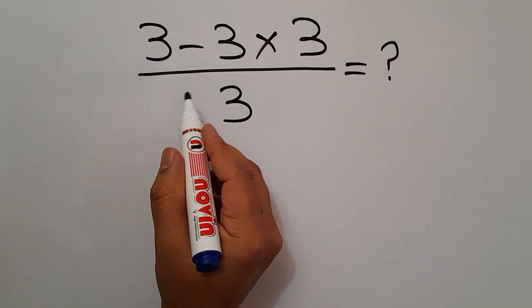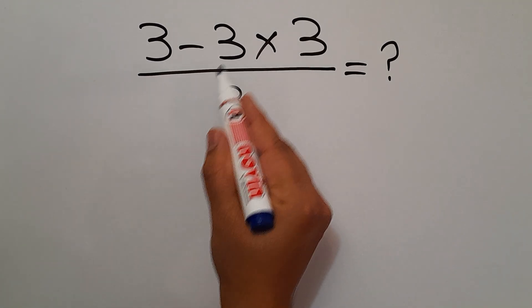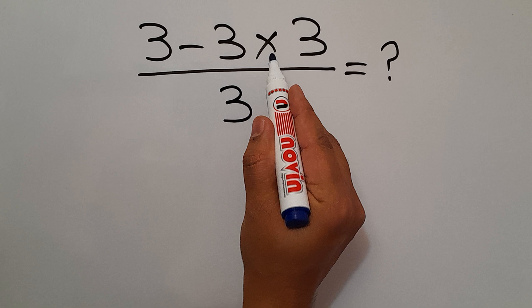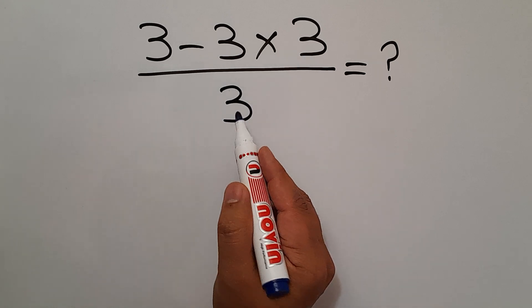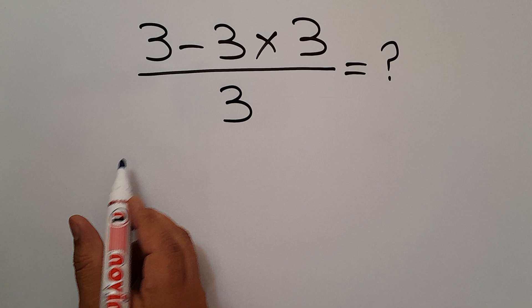Hey guys, welcome to Math Joy. In this video we want to find the value of this fraction: 3 minus 3 times 3 over 3. Are you ready to solve? Let's get started. Instead of this fraction, we can write parentheses: the numerator 3 minus 3 times 3, divided by the denominator 3.